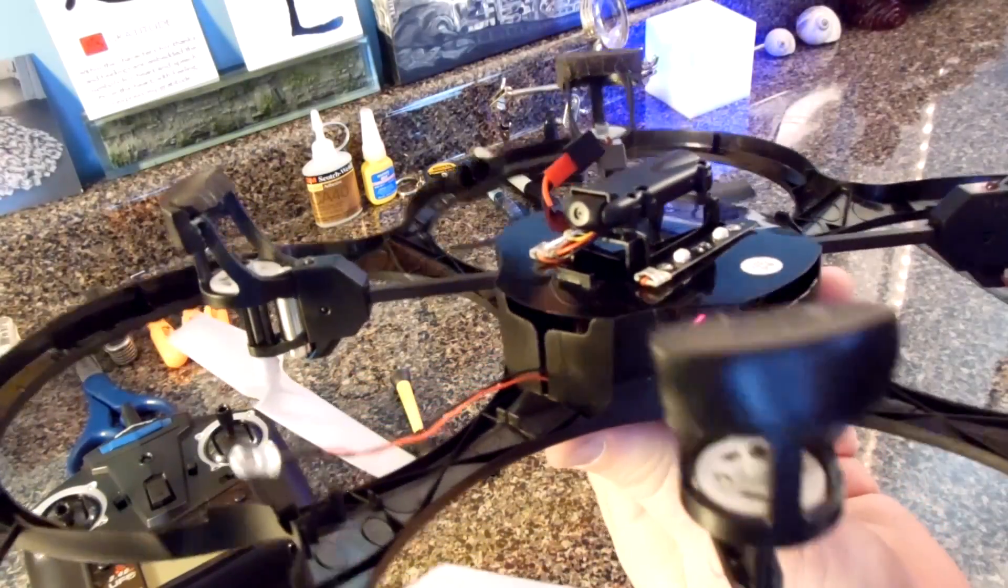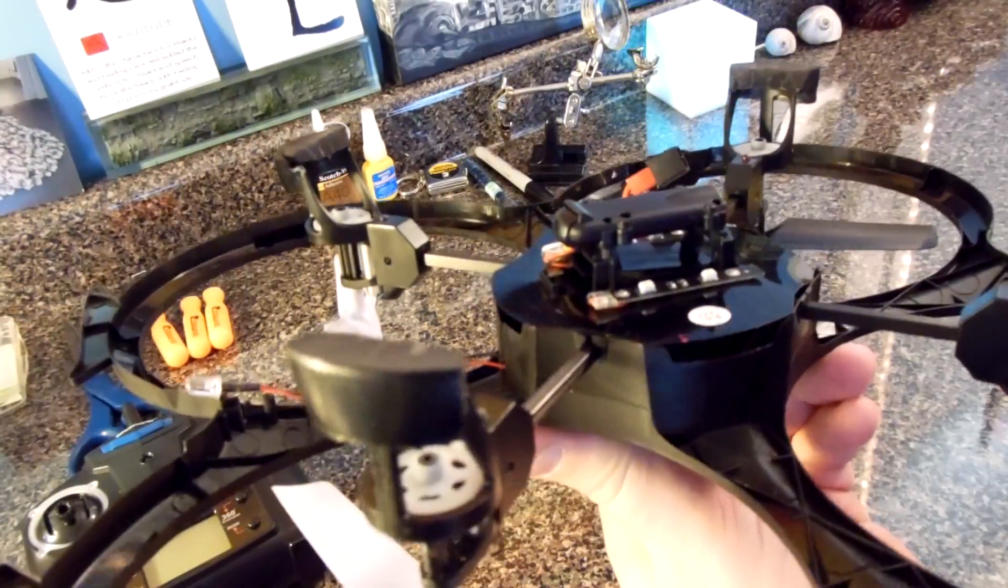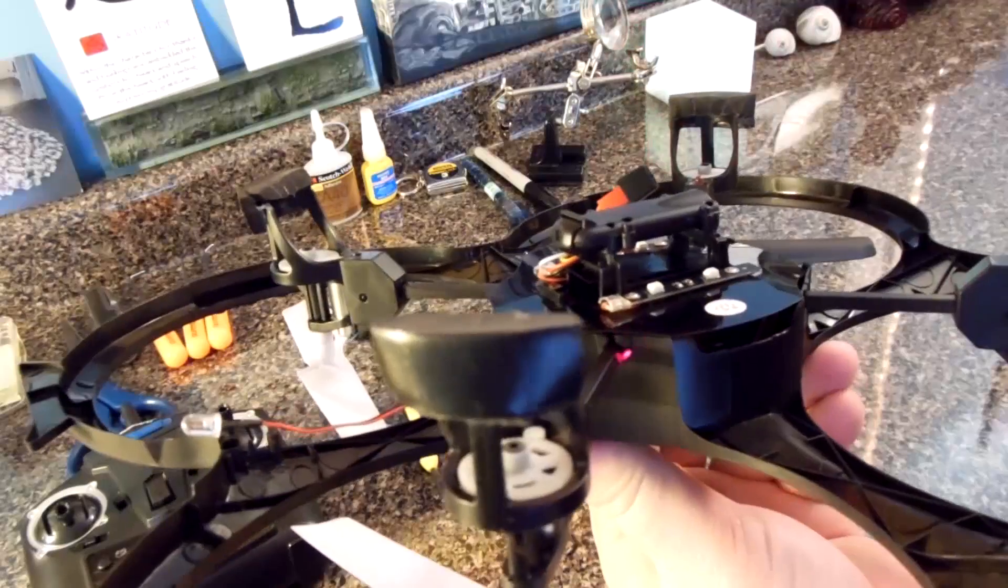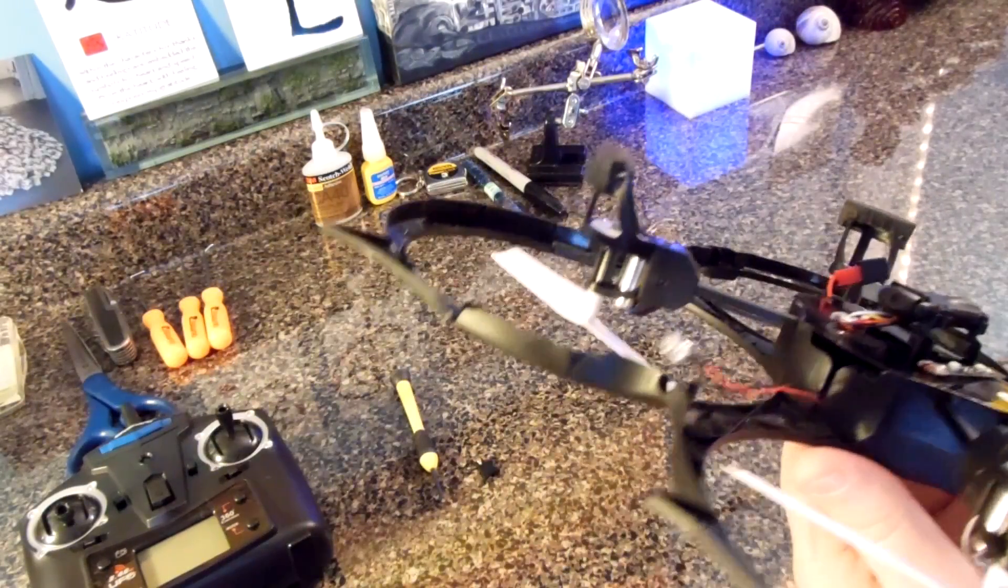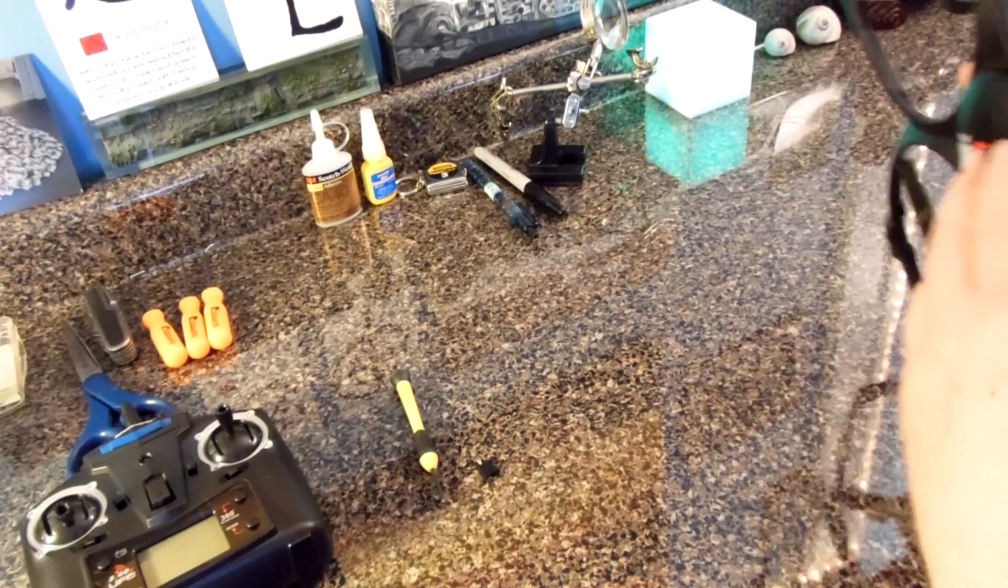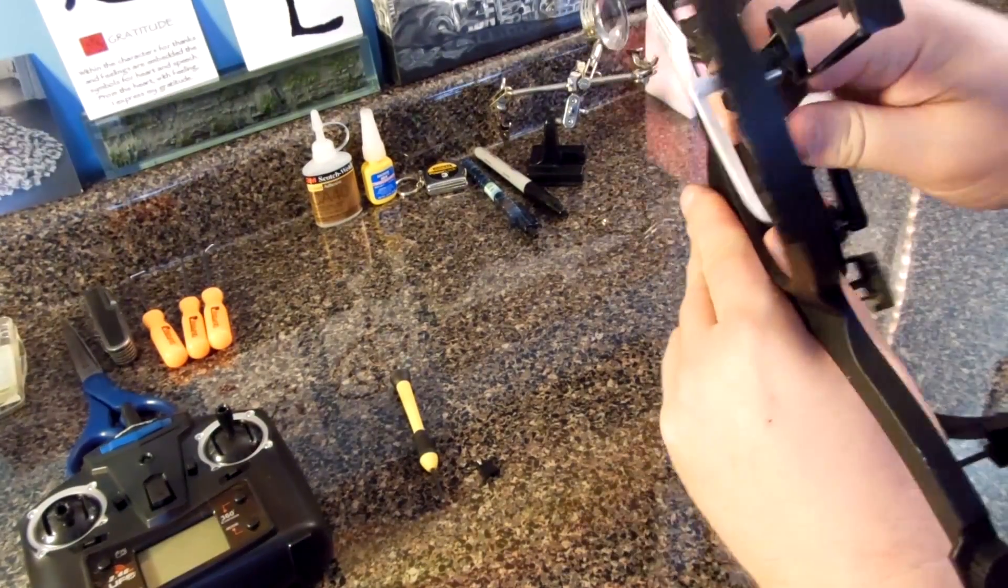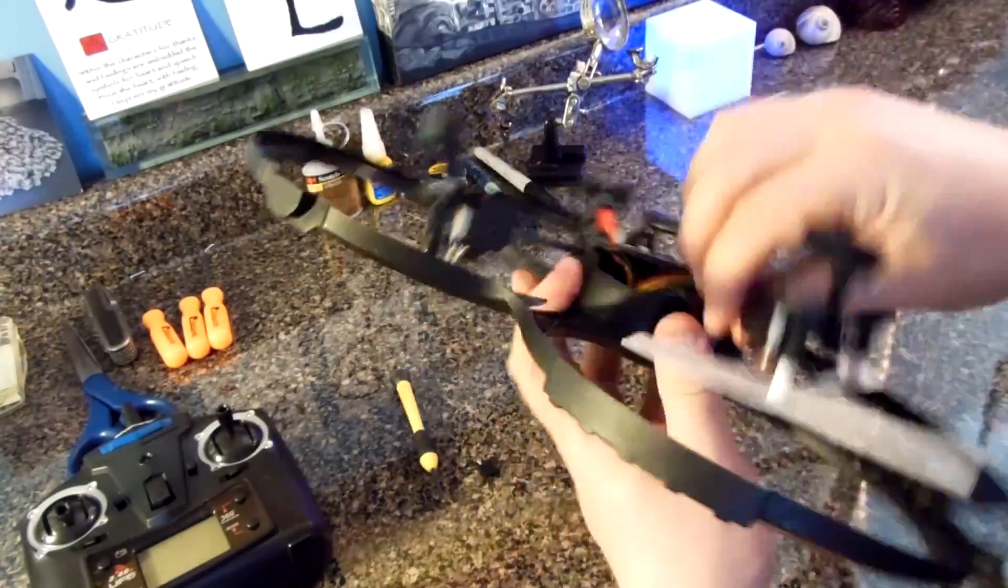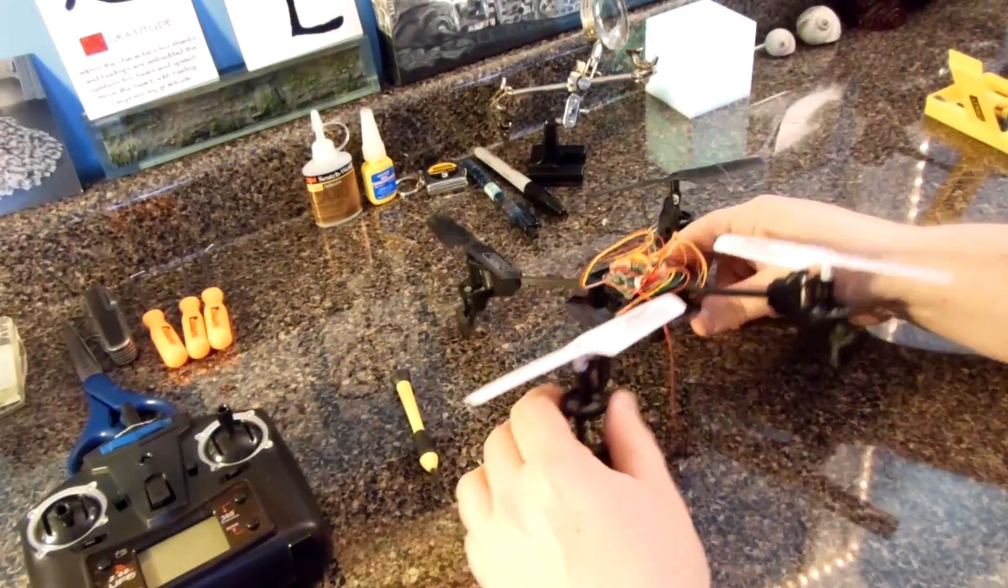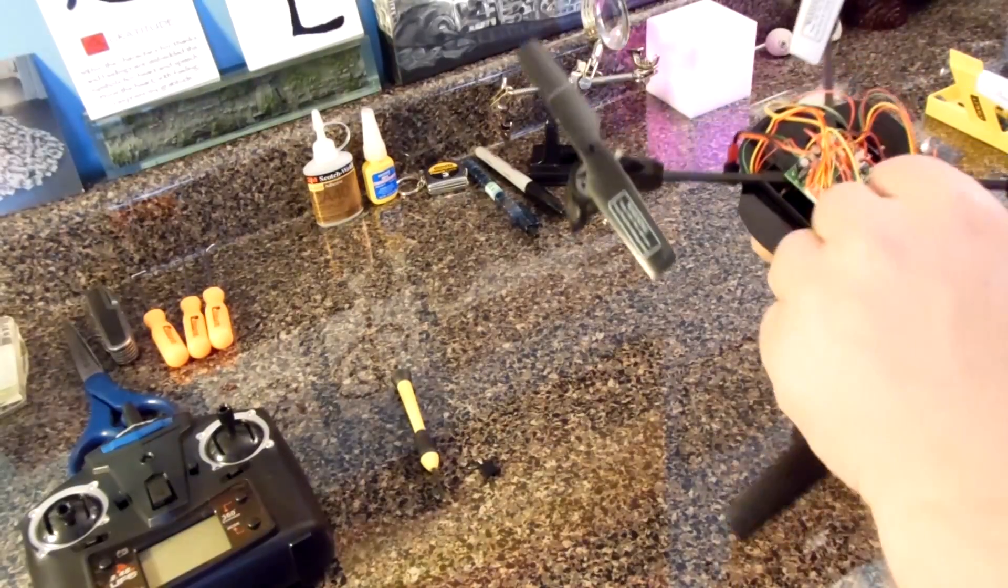You see that there are splits at each prop arm. Just spread the plastic apart and slide the arm through. Do this for all four arms. Be careful not to cut or damage any of the wires. They're all bunched together under the housing.